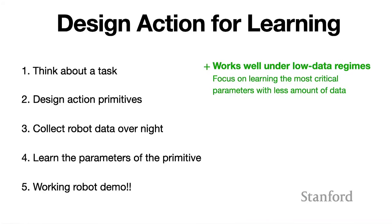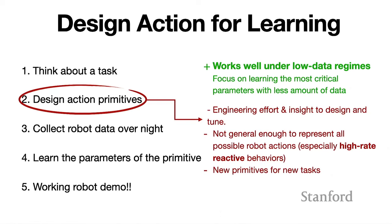This pipeline has been working pretty well for us for a few years, and it particularly works well under a low-data regime — when you don't have a lot of robot data to train the different action primitives. What this framework really allows us to do is make robots focus on learning the most critical parameters with less data, instead of learning everything from scratch. However, there are also a few downsides. First, designing those action primitives requires a lot of engineering effort and insight — we need to spend a lot of time thinking about the right prioritization. More importantly, those action primitives are sometimes just not general enough to represent all possible robot actions, especially those requiring high-rate and reactive behaviors. So often you need to redesign new action primitives for new tasks, and slowly we realized this step was becoming the bottleneck for the whole framework.